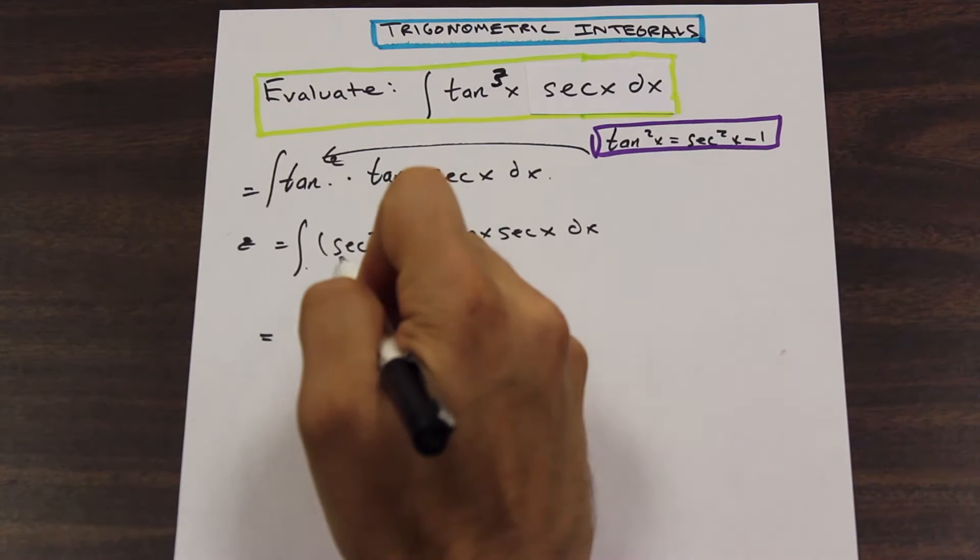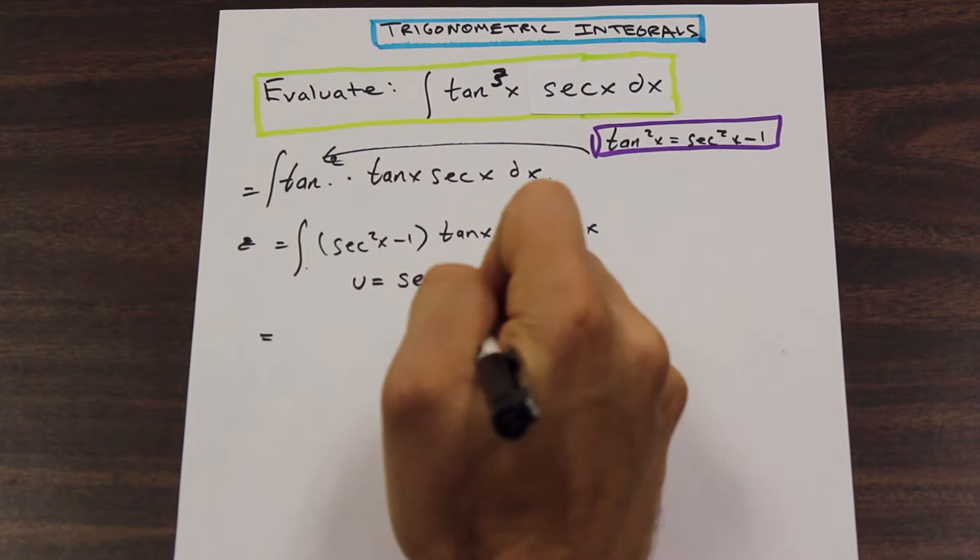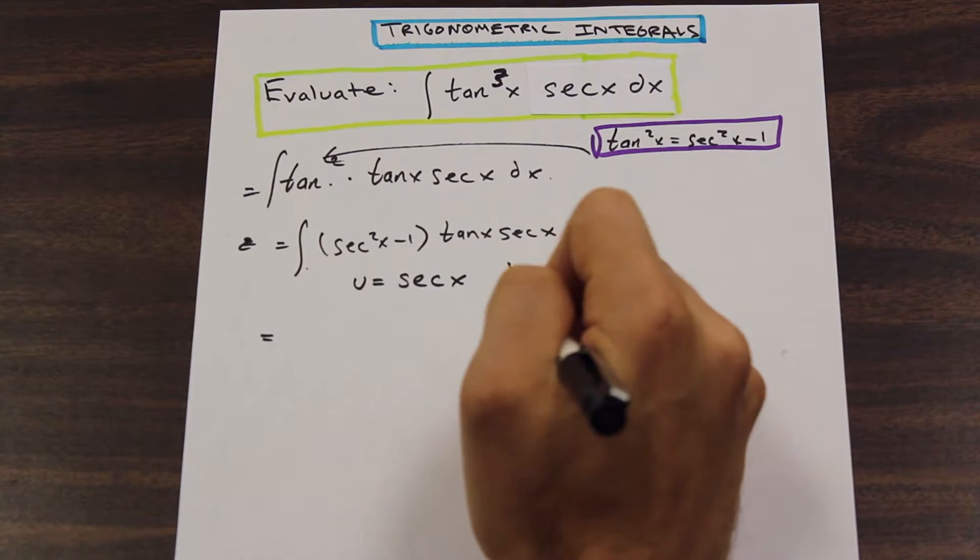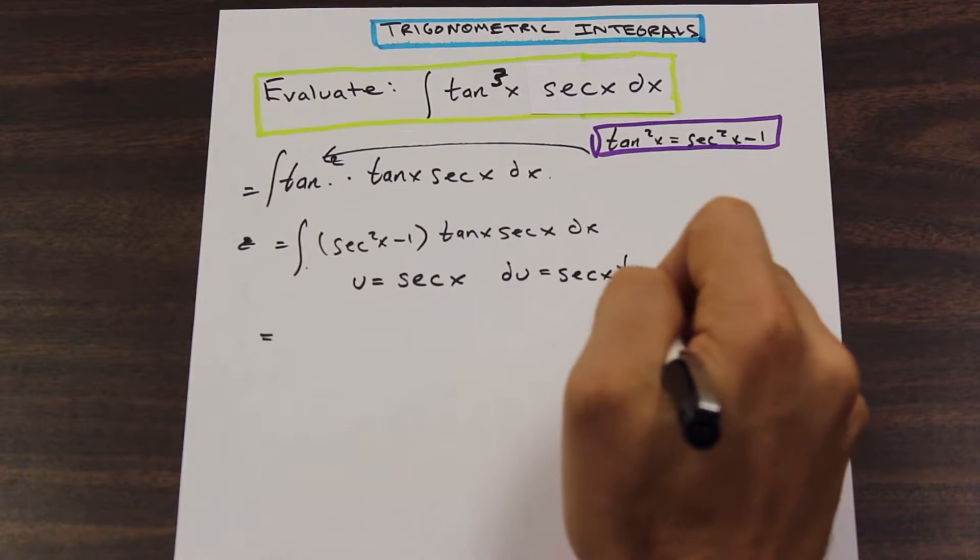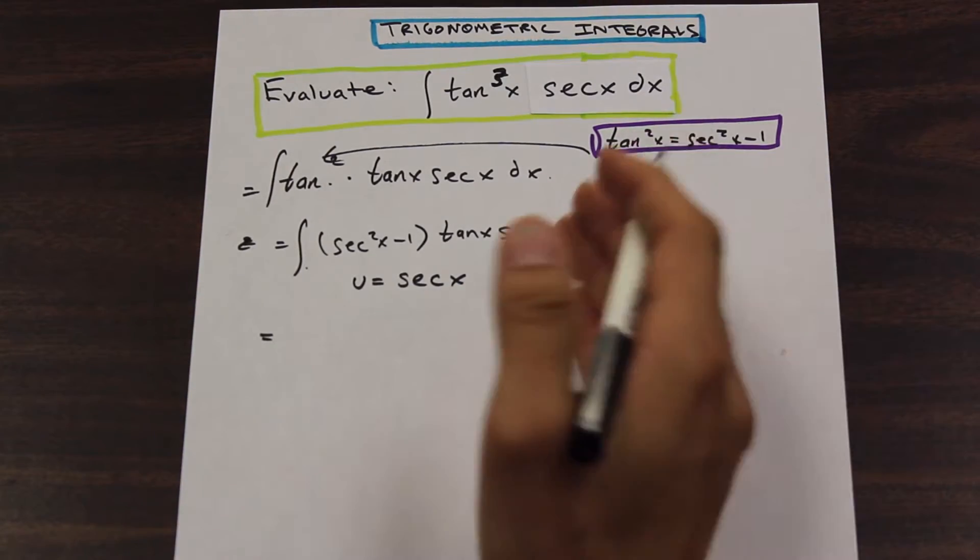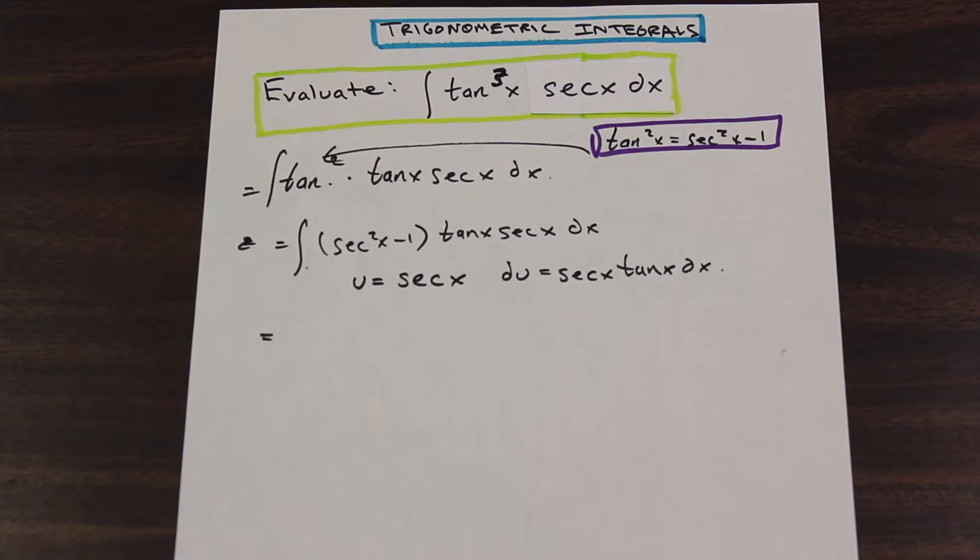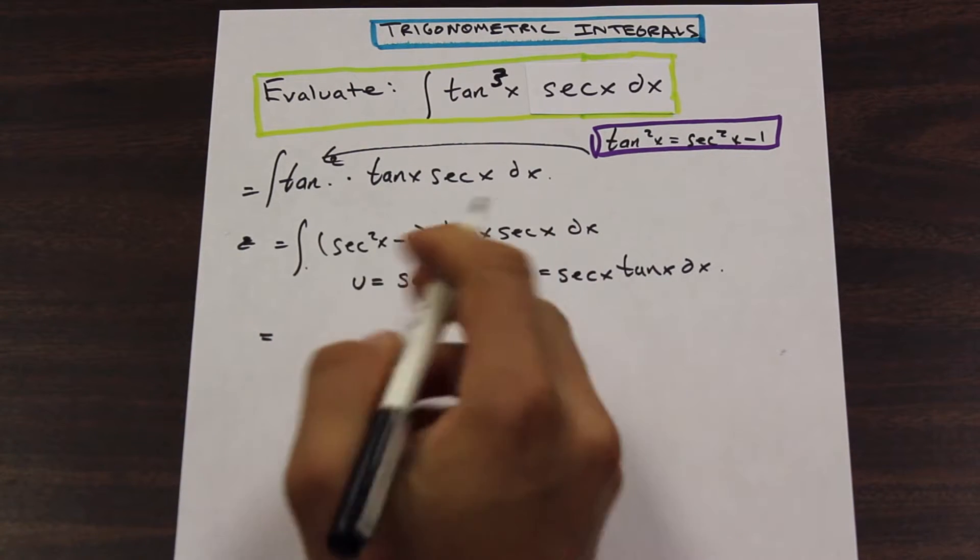So we're going to say that u is equal to secant x. And du is equal to secant x tan x dx, because the derivative of secant x is just secant x tan x dx. All right, so now what do we do? How do we proceed? Well, we're going to make our u substitution here.